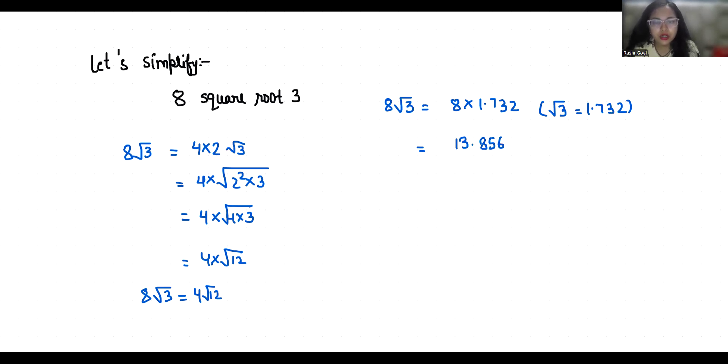So 8√3 is approximately 13.856. I hope it's clear and you find it useful. Please give us a thumbs up and subscribe to my channel. Stay tuned for more upcoming videos. Thank you!